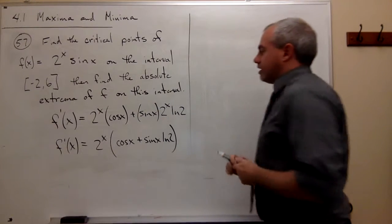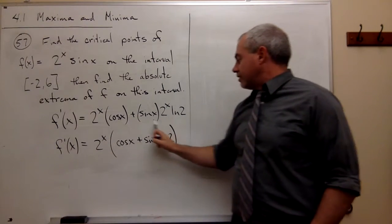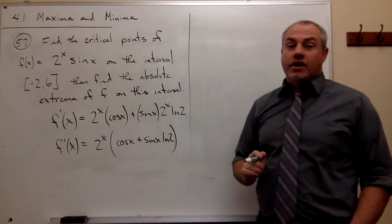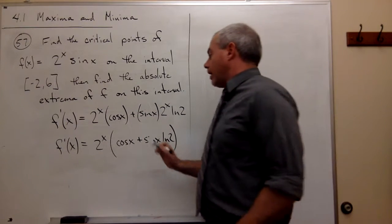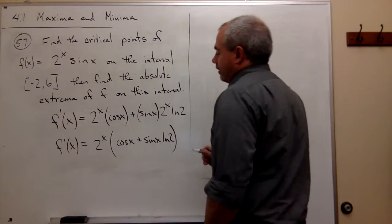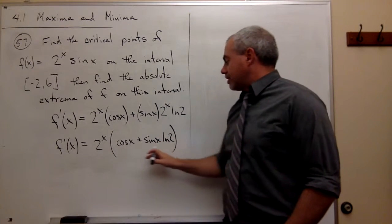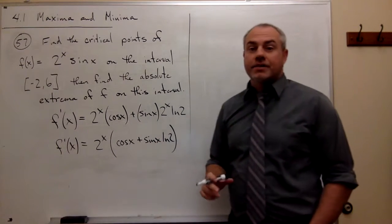And what I'm interested in is where is this thing equal to 0. So I want to set it equal to 0, but notice that for this thing to be equal to 0, one of two things has to be true.